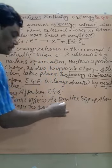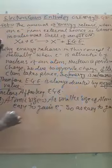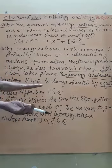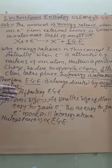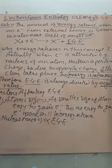Now, factors affecting electron gain enthalpy. The first factor is atomic size. As the size of the atom is smaller, it is easier to gain an electron because the attraction will be very high. So, as it is easier to gain an electron, more energy will be released.